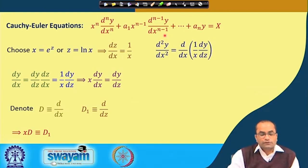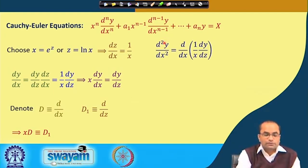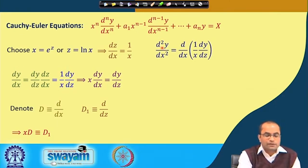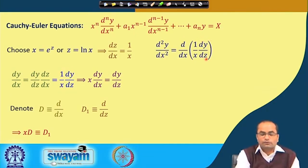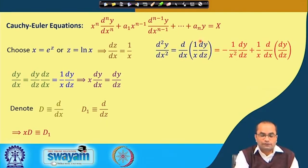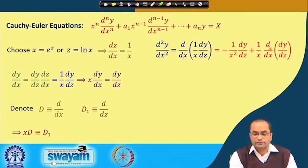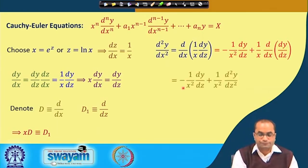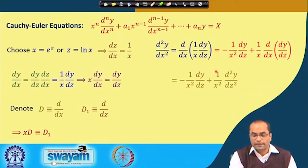For the second-order term, d²y/dx² = d/dx of (1/x · dy/dz). Using the product rule, the derivative of 1/x gives -1/x², so we get (-1/x²)·(dy/dz) plus (1/x)·d/dx(dy/dz). Differentiating dy/dz with respect to x by the chain rule gives (d²y/dz²)·(dz/dx) = (d²y/dz²)·(1/x). So altogether d²y/dx² = (1/x²)·(d²y/dz² - dy/dz).